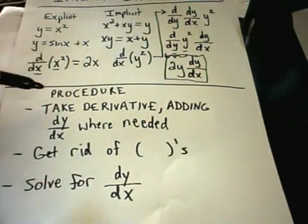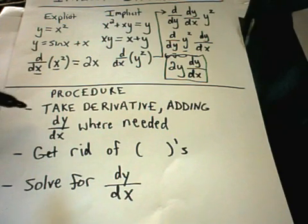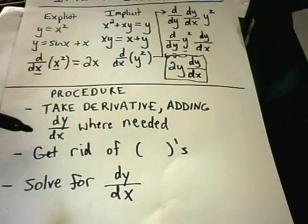Okay, so in general, the procedure for doing one of these implicit differentiation examples, basically just take the derivative like normal, again adding dy dx's where needed, and you'll only need those when you're taking the derivative of something not involving x.